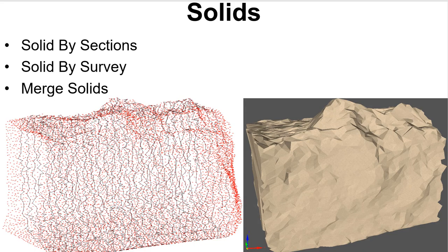For creating a solid model from a scan, the solid bisection has new controls for the sample width and triangulating the ends. You can also make a solid for an open surface like a cliff face. Solid by Survey is a new command to create a solid from survey points plus a perimeter polyline. Merge Solids has a new algorithm that handles larger solid models.